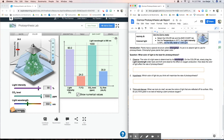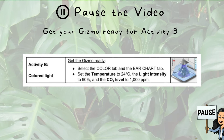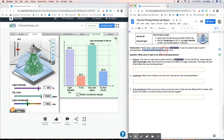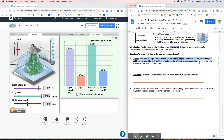A quick introduction: plants have a special structure called chlorophyll. Chlorophyll is located in the chloroplast, and its job is to absorb sunlight to use it for photosynthesis. Chlorophyll is what gives plants their green color. Knowing that, we're now going to talk about what color of light is the best for photosynthesis. The color of a light wave is determined by its wavelength.